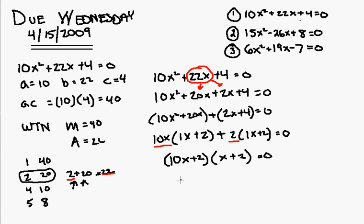These two things multiplied together equals 0. Therefore, 10x plus 2 equals 0 and x plus 2 equals 0.